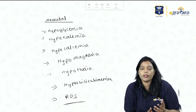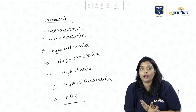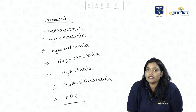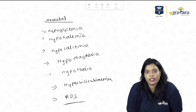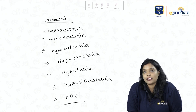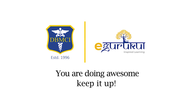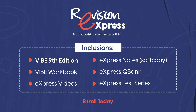Overt DM carries the same complications as GDM, but may also include IUGR if there is vasculopathy. This covers Overt DM and GDM in brief, as per Williams 26th edition. Thank you, see you in the next video.